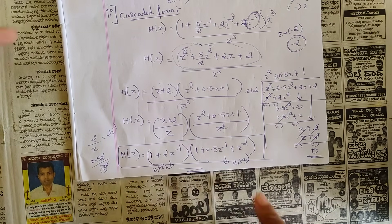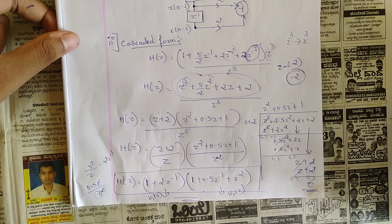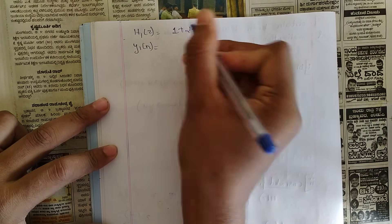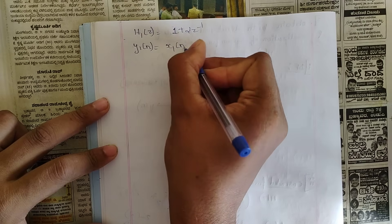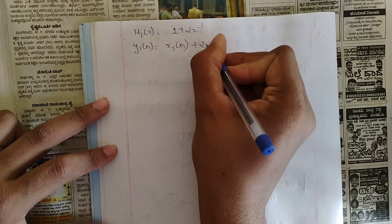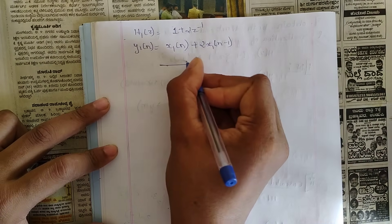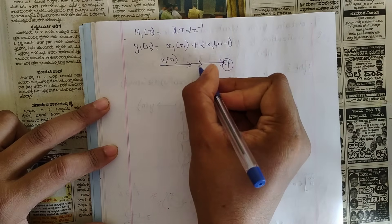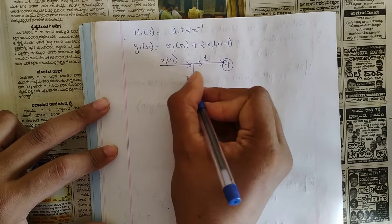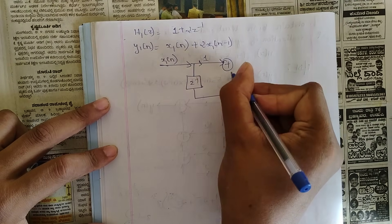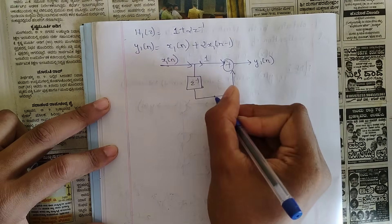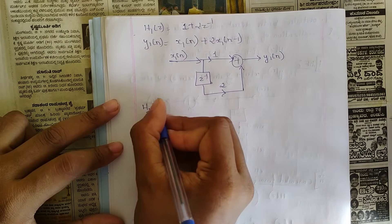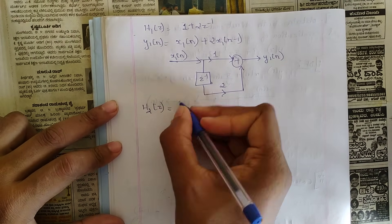For H1(z): write y1(n) = x1(n) + 2·x1(n−1). This is not in linear phase since we have only two terms. Draw the direct form structure: one summer, one z⁻¹ delay, coefficient of x1(n) is 1, and the coefficient of x1(n−1) is 2. The output is y1(n).